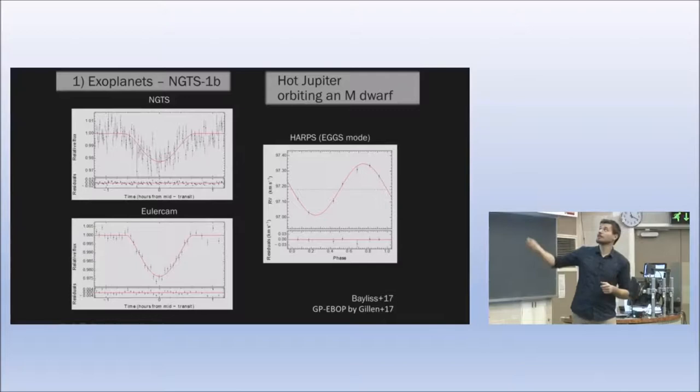We can also perform some spectroscopic follow-up. The HARPS spectrograph, currently the state of the art, can give us the radial velocity signal, the pull of the planet on the star and the wobble of the star. From this we can calculate the mass.